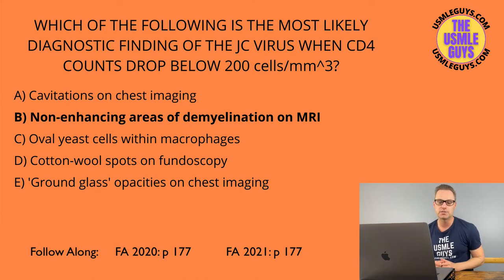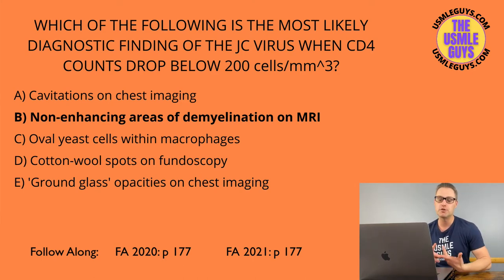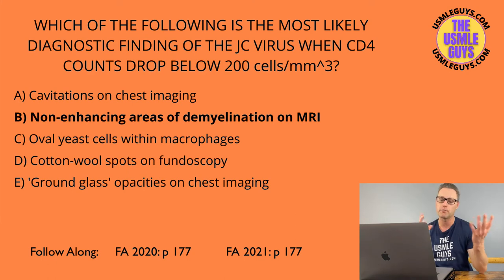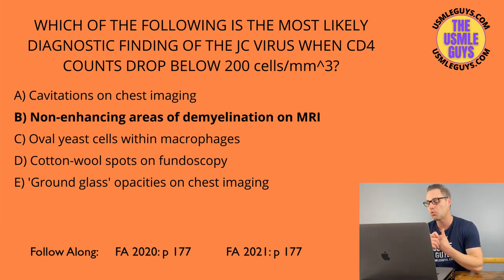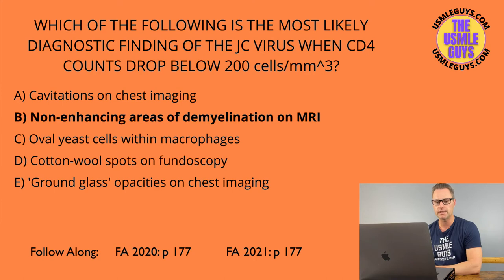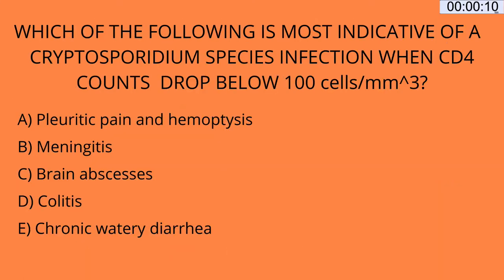Pneumocystis jirovecii leads to Pneumocystis pneumonia, which demonstrates ground glass opacities on imaging. Let's move on to the next question — hit that pause button and come back when you think you've got the right answer.